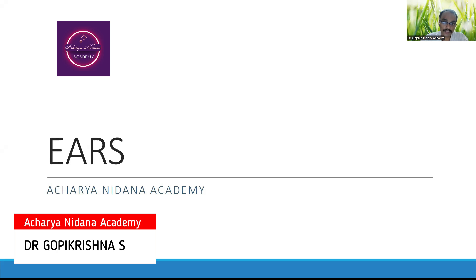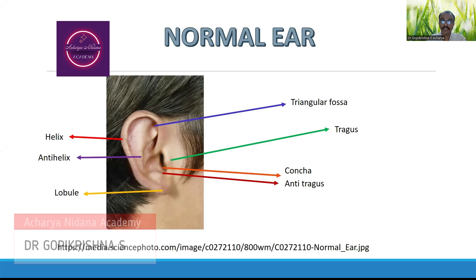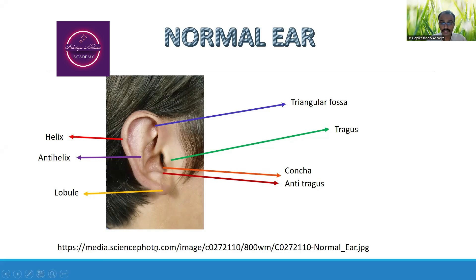When you look into the ears, a brief anatomy has to be known. This is what is considered to be the brief structural aspect of the ear. This is considered to be the triangular fossa — the purple colored arrow is showing the triangular fossa. And this is considered to be the helix. The one which is present inside the helix, starting from the triangular fossa, is considered to be the anti-helix. This is the bottom-most part, considered to be the lobule.